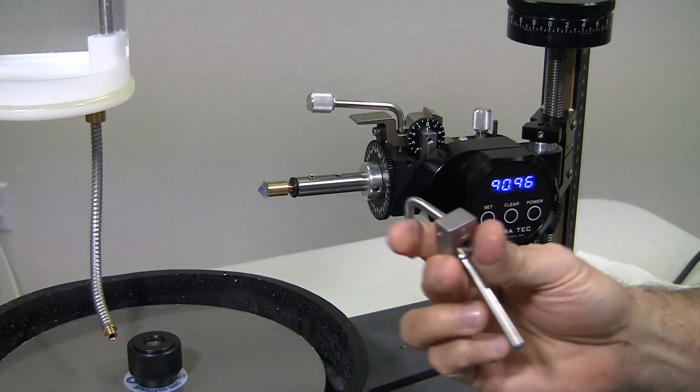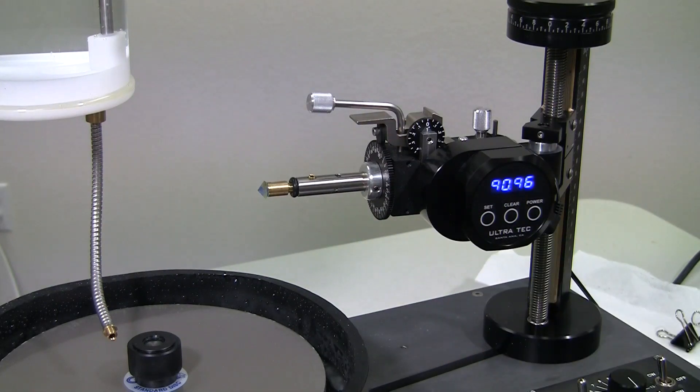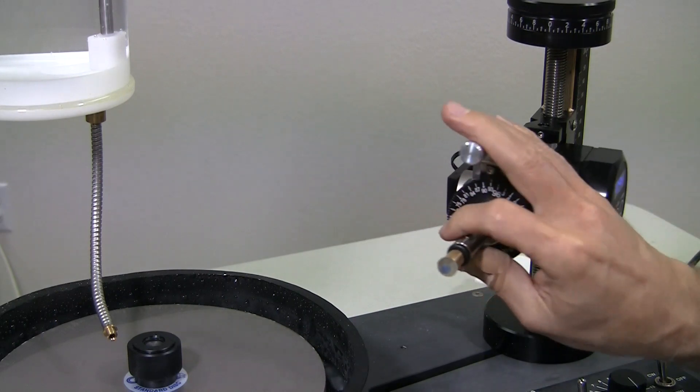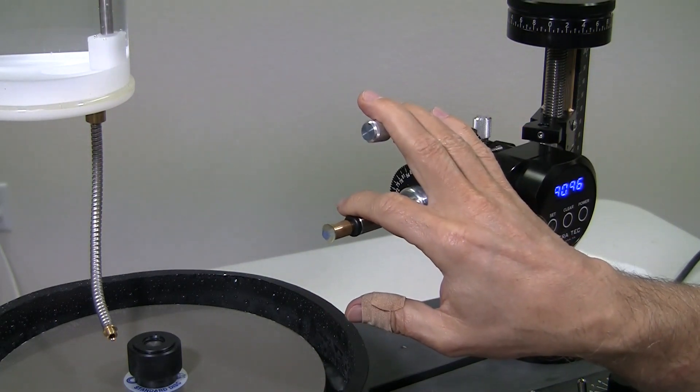There's a nifty thing called a speed trigger. And if a person has an injury or a disability or for any reason wants to be able to operate the quill one-handed, the speed trigger will allow you to do that.